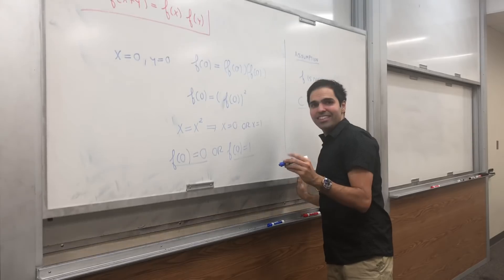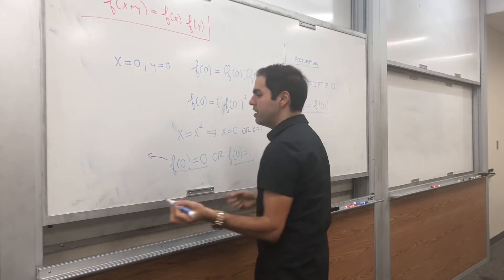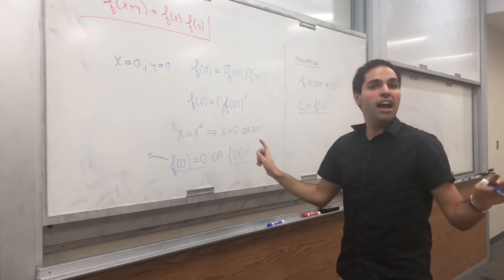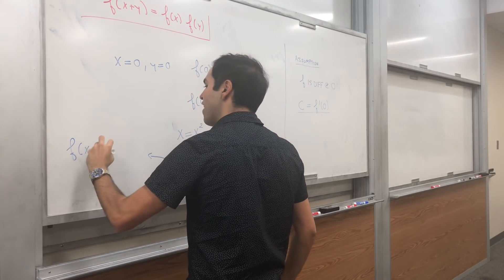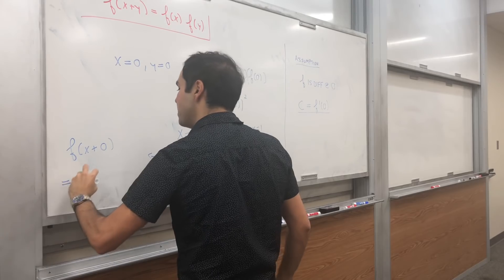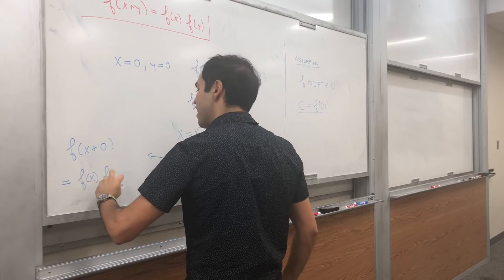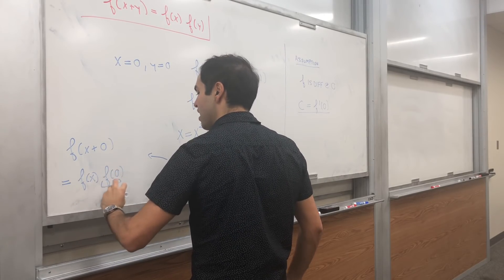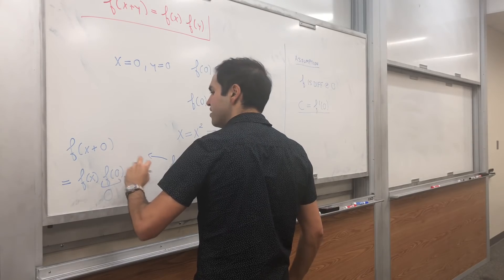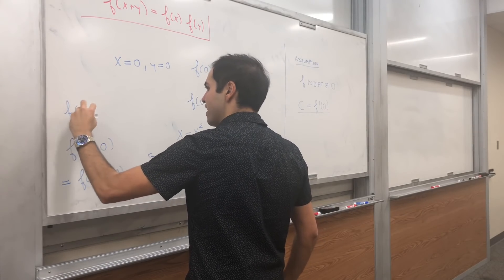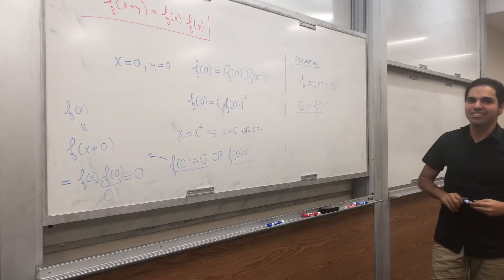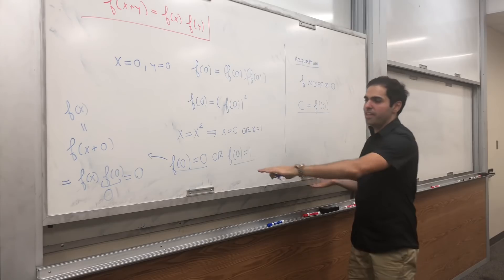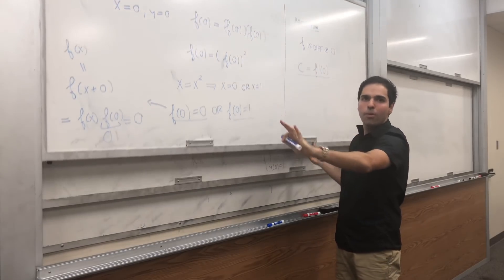And lastly, what if f of 0 is 0? Then it turns out f has to be the 0 function because f of x plus 0 then would be f of x times f of 0. And this is 0. And we just get 0. And this is f of x. So f of x would be identically the 0 function. And this also works as f is 0 at any other point.